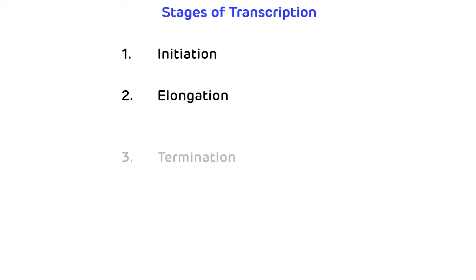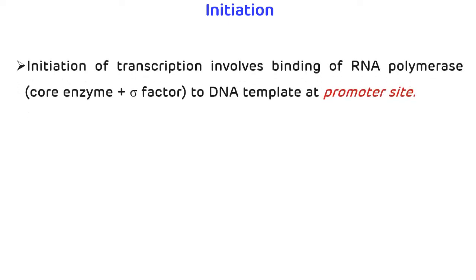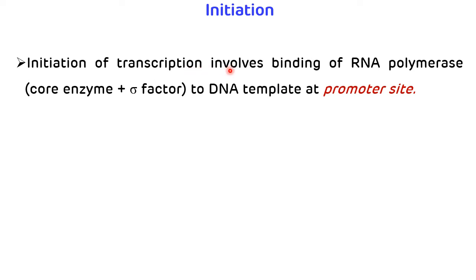The transcription process is divided into three stages: initiation, elongation, and termination. In the initiation process, unlike replication, no primer is required. Initiation of transcription involves binding of the RNA polymerase holoenzyme — which consists of the core enzyme plus the sigma factor — to the DNA template at the promoter site.